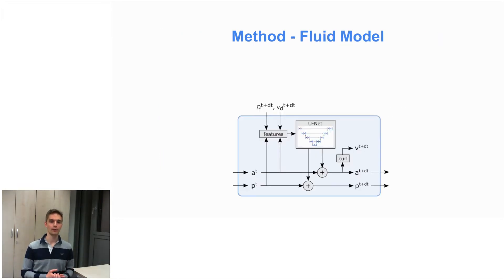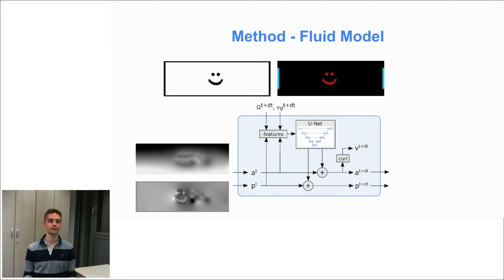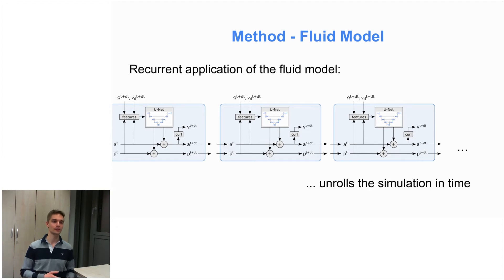Now I will continue with our method and I will explain our fluid model which takes as input the vector potential and pressure field of the previous time step and the fluid domain and the boundary conditions. And these are then fed into a U-Net which predicts the residuals for the vector potential and pressure field of the next time step. And if we want to obtain the flow field, the velocity field, we simply can take the curl of the vector potential. And if we want to unroll the simulation over time, we can simply recurrently apply this fluid model onto the fluid state.